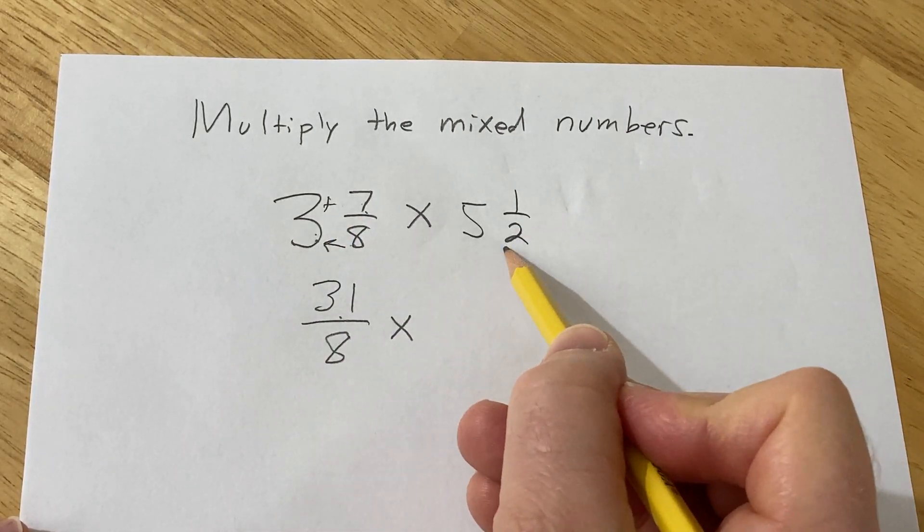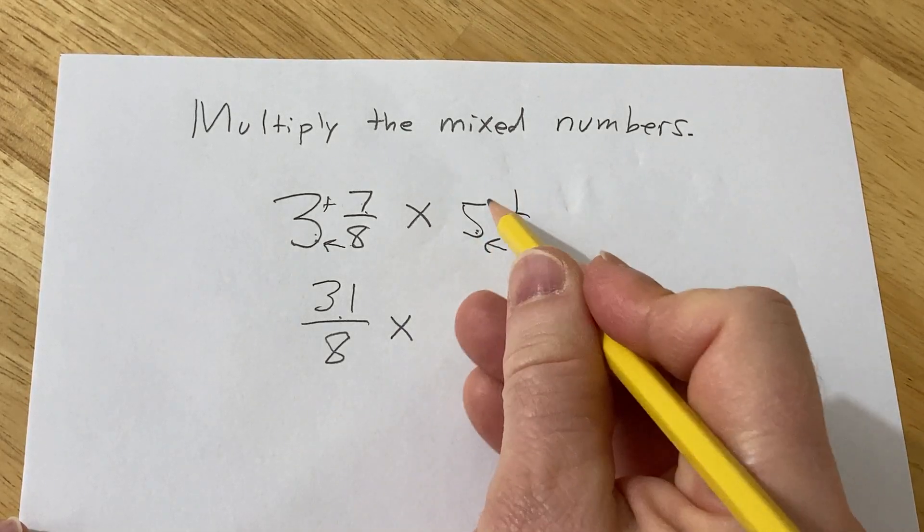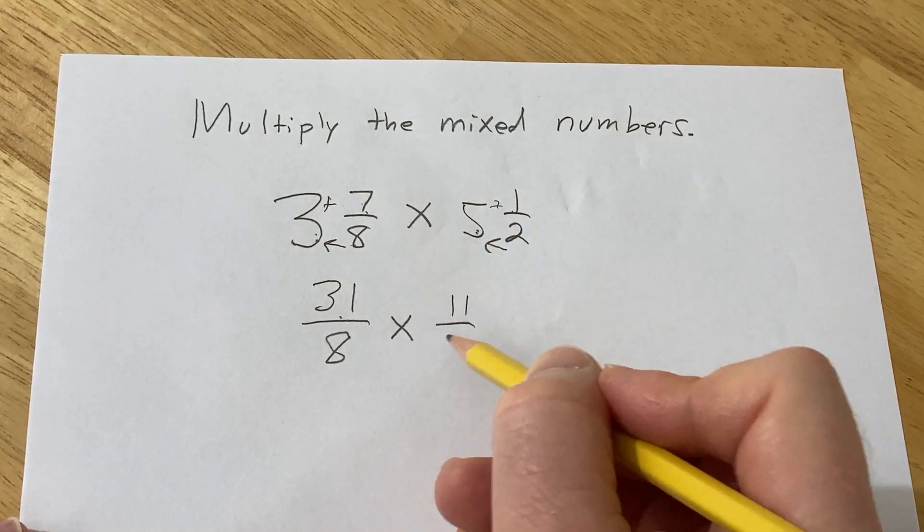Do the same thing here. 2 times 5 is 10. 10 plus 1 is 11. So this is 11 over 2.